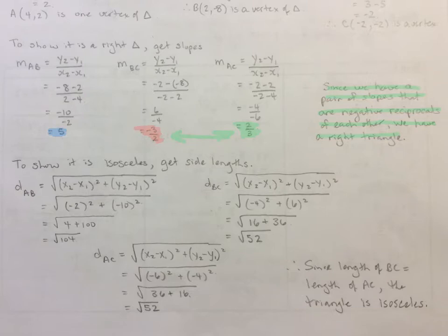Now we need to show it's isosceles. And to show it's isosceles, we need to get the side lengths. I found the side length AB to be the square root of 104 units long. Side BC had a length of the square root of 52. And side AC also had a length of the square root of 52. So since the length of BC is equal to the length of AC, the triangle is isosceles.